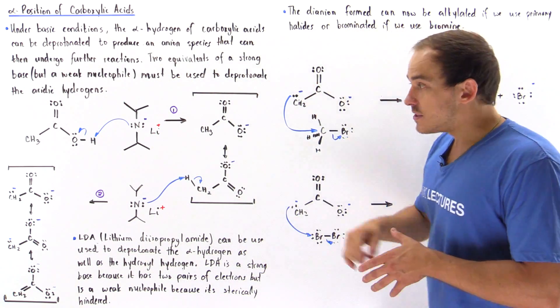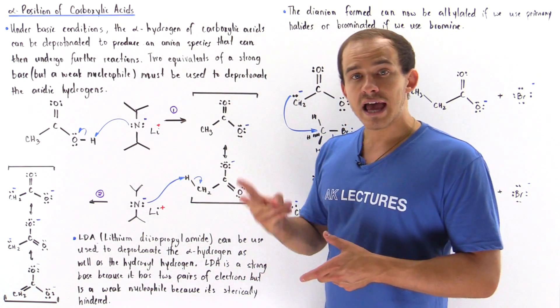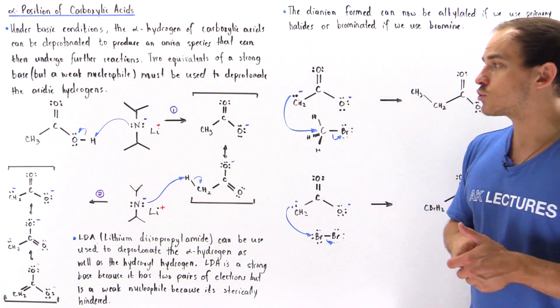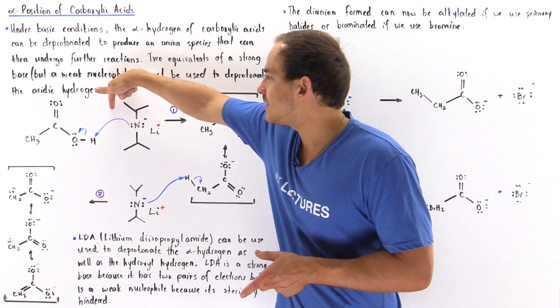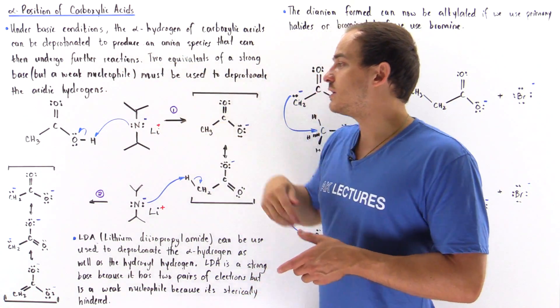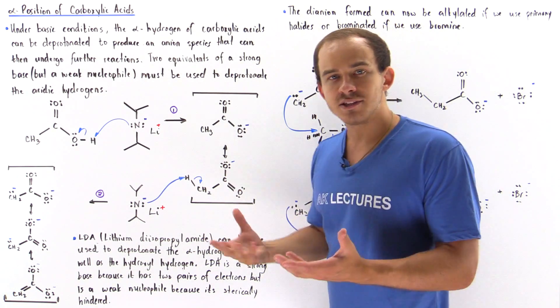So basically this is a good base because it contains two pairs of lone electrons, but it's a poor nucleophile because it contains these relatively large isopropyl groups, and so that creates steric hindrance.